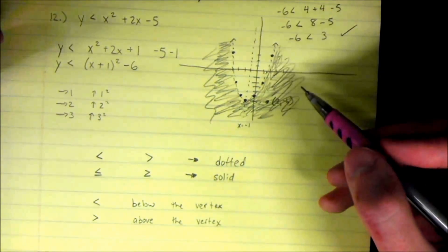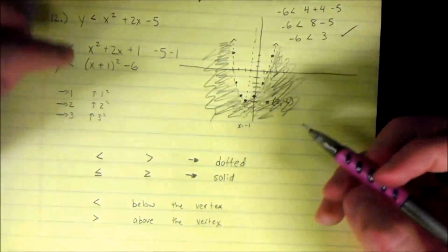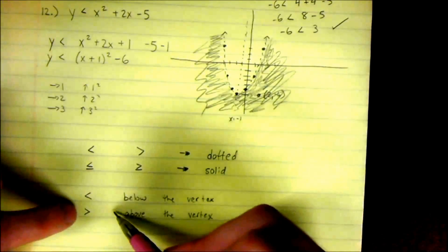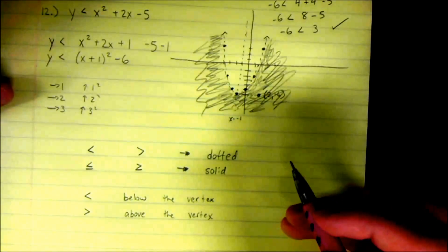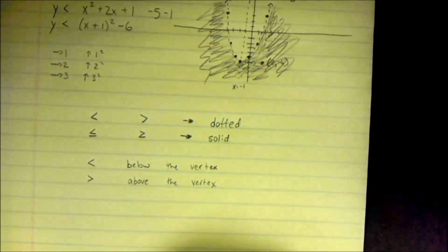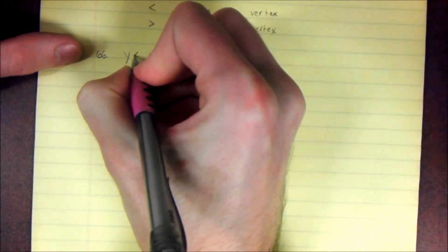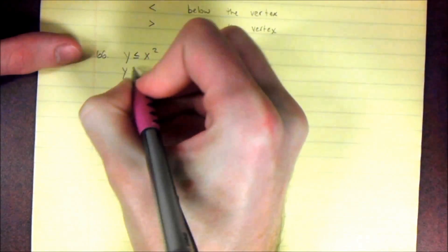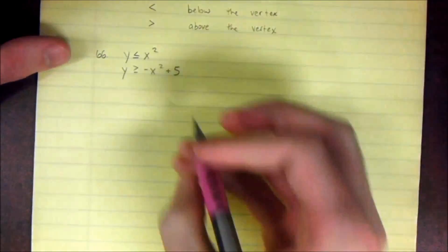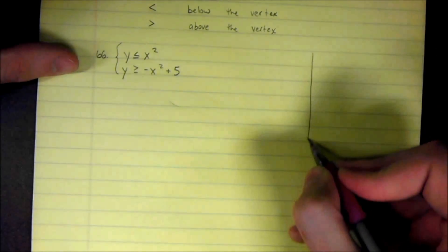The only difference between graphing a normal quadratic with an equal sign and a quadratic inequality is: if you have no equal to, it's a dotted line; if you have equal to, it's solid — and then you consider where you're shading. Rather than bore you with more single-inequality examples, let's jump ahead and look at graphing a system of inequalities. Here in the textbook this is number 66.